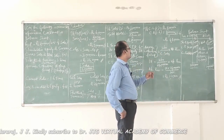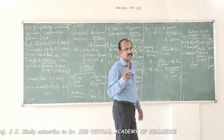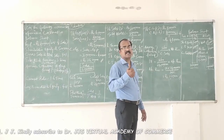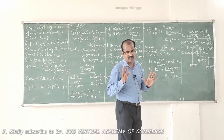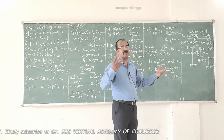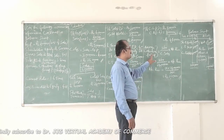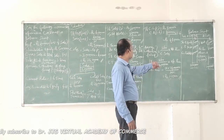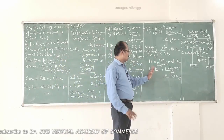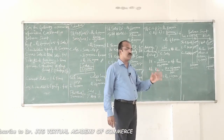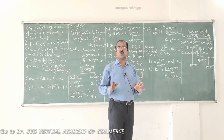The next ratio is average collection period of debtors. The formula is 360 days divided by credit sales, multiplied by accounts receivable, equals 18 days. In the absence of opening accounts receivable information, we use closing accounts receivable. So 18 equals 360 divided by credit sales of 24 lakhs, multiplied by accounts receivable. Using cross multiplication: accounts receivable equals 18 multiplied by 24 lakhs divided by 360, giving 1 lakh 20 thousand rupees.